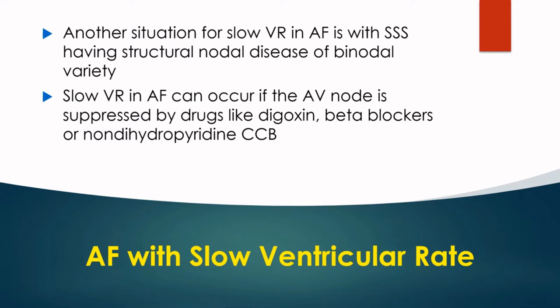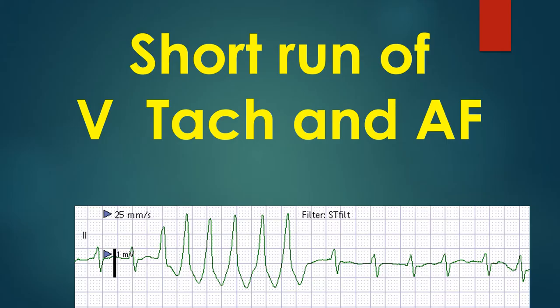Slow ventricular rate in AF can occur if the AV node is suppressed by drugs like digoxin, beta blockers, or non-dihydropyridine calcium channel blockers like verapamil or diltiazem.